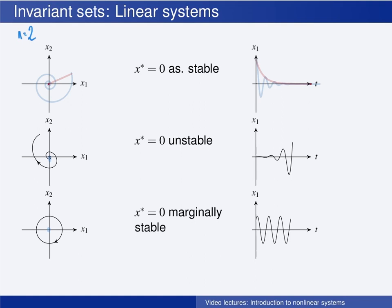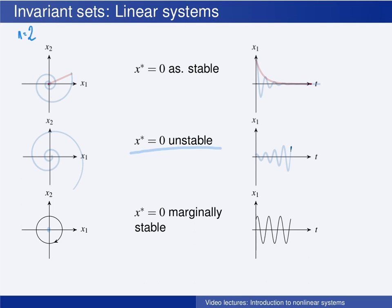If the linear system is unstable, meaning that its equilibrium point is unstable, then the state will take off to infinity. It may oscillate a little at first, or it may just take off straight to infinity.